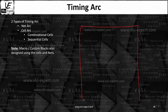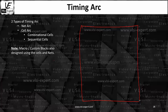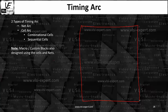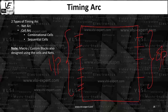You can understand the timing arc from this example. There is a block — a boundary — and within this boundary some functioning is happening. It may be a simple buffer, a simple delay, an inverter, some logic gate, or maybe a complex circuit inside. As an end user, you don't know what functioning is happening inside this boundary. What you do know is that there are certain input pins and certain output pins.